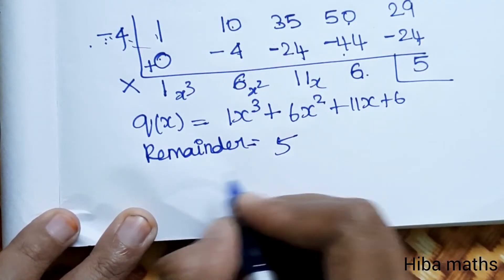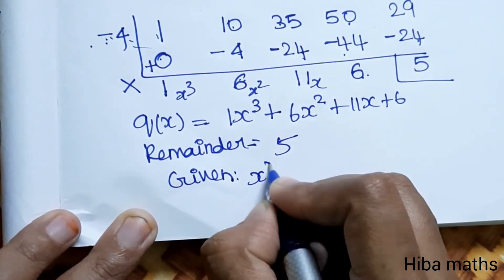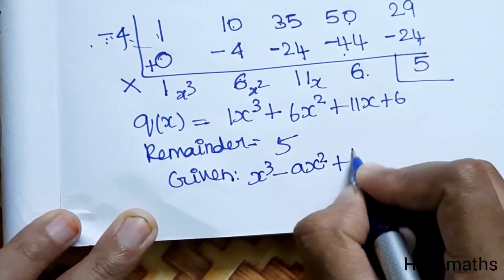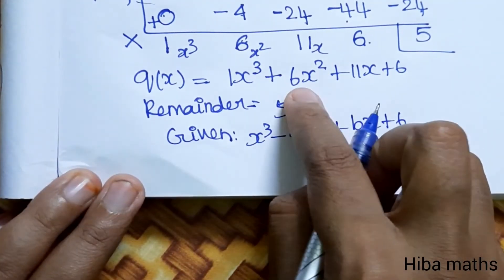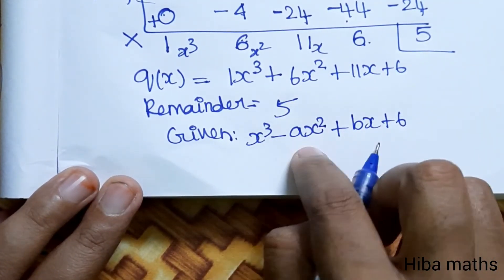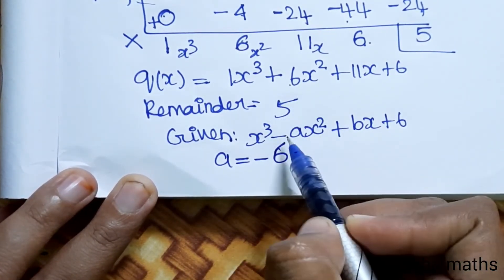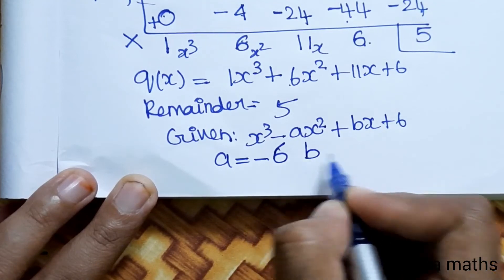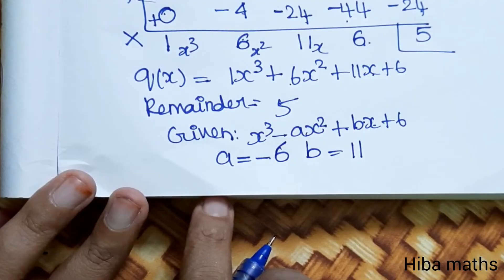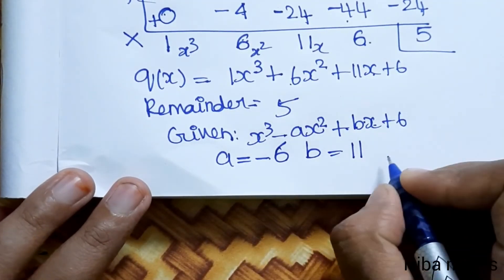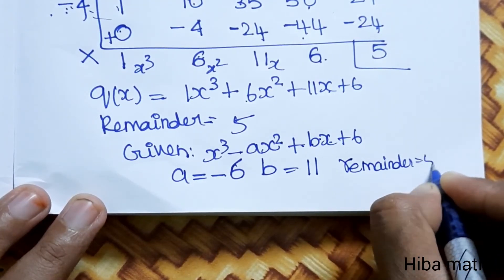Now comparing with the given quotient x³ - ax² + bx + 6: the coefficient of x² gives minus a = 6, so a = -6. The coefficient of x gives b = 11. Therefore a = -6, b = 11, and the remainder = 5.